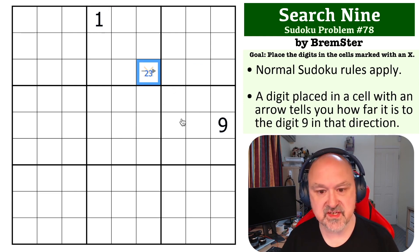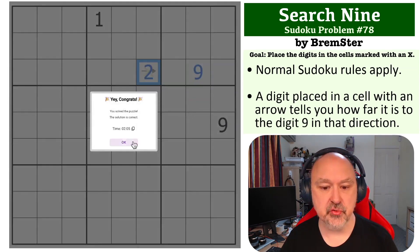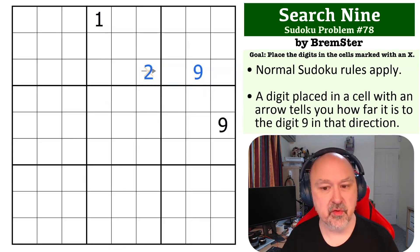It can't be a 1 because there's a 1 in the box, so that means the 9 can only be 2 or 3 steps away. But the 9 can't be 3 steps away because that would duplicate the 9 in the column. So the 9 actually has to be here, which means this is a 2, and the 2 is what has to go on the x.